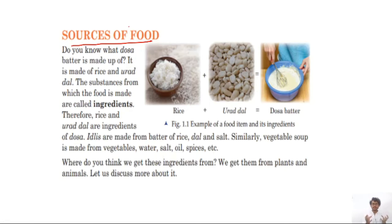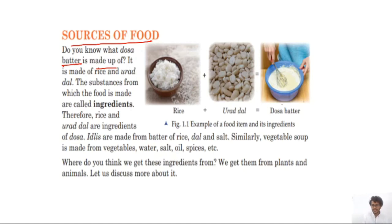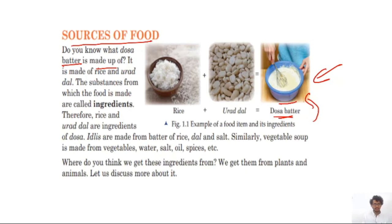Do you know what dosa batter is made up of? I hope you all have eaten dosa. The dosa batter is white and thick. It is made up of rice and urad dal — you mix them together and grind them in a mixer, that's how you make dosa batter. The substances from which food is made are called ingredients.